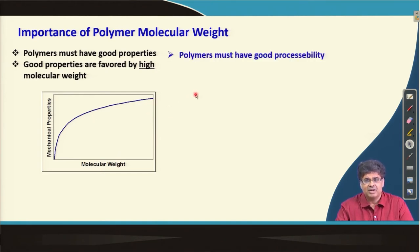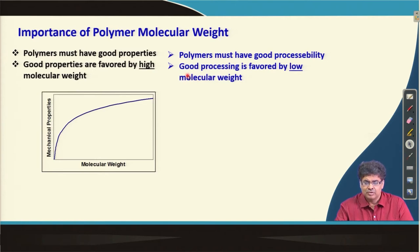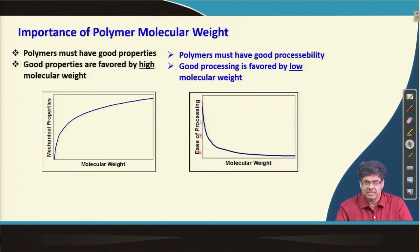Simultaneously, to make the product, the polymer sample must undergo a processing step where we basically form the final product. Polymer flow is a very important property here because polymers are generally melted and given the shape of the final product. Good processability is generally favored by low molecular weight, so ease of processing is inversely related to molecular weight — higher molecular weight means lower ease of processing.